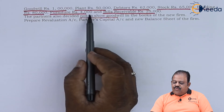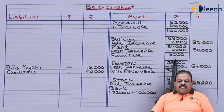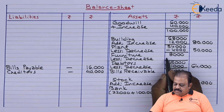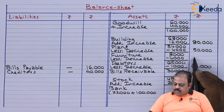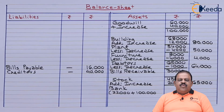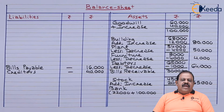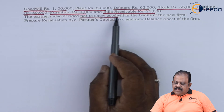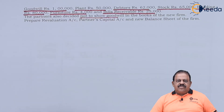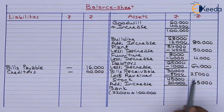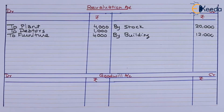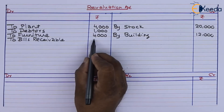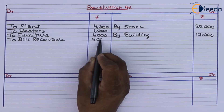Next, furniture revalued at 4,000. Old value of furniture is 8,000, so decrease by 4,000; revalued at 4,000. Revaluation account debit to furniture 4,000. Next, bills receivable revalued at 25,000. Book value is 30,000, decreased by 5,000. Revaluation account debit to bills receivable 5,000.